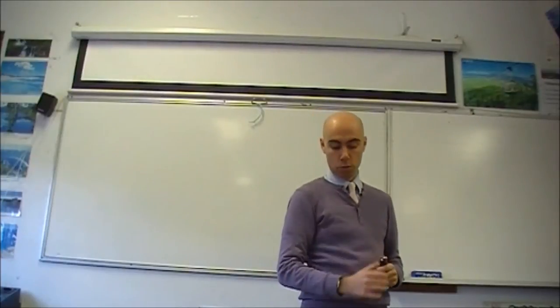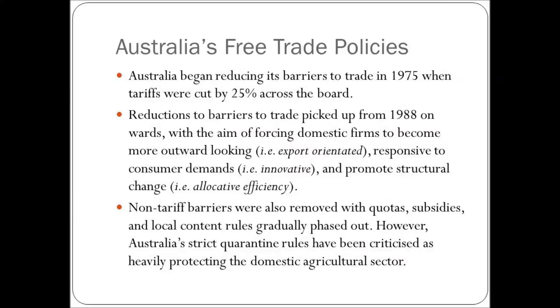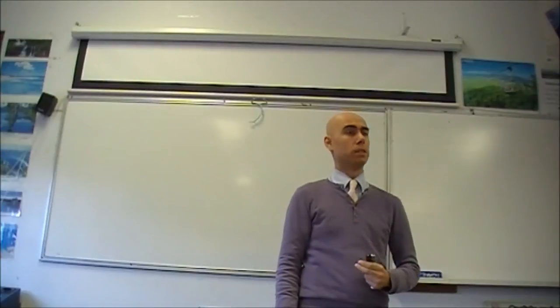If we look at the bottom part of page one, Australia's free trade policies, we can see Australia began reducing its barriers to trade in 1975 when tariffs were cut by 25% across the board. Before this point, Australia was a highly protected economy.